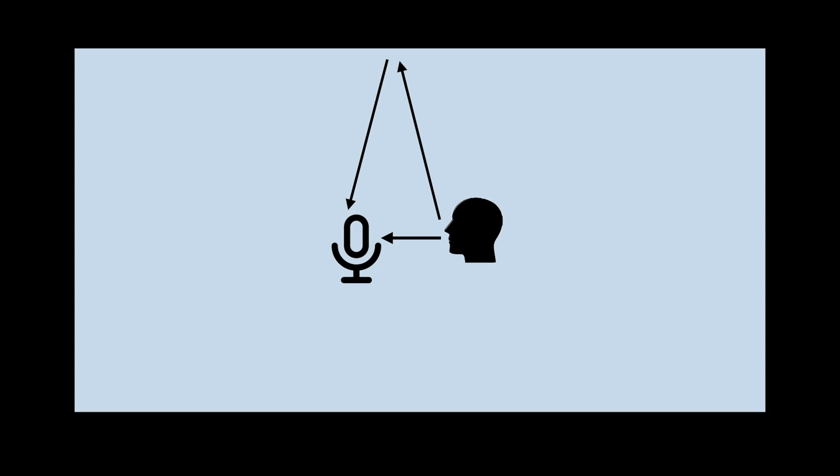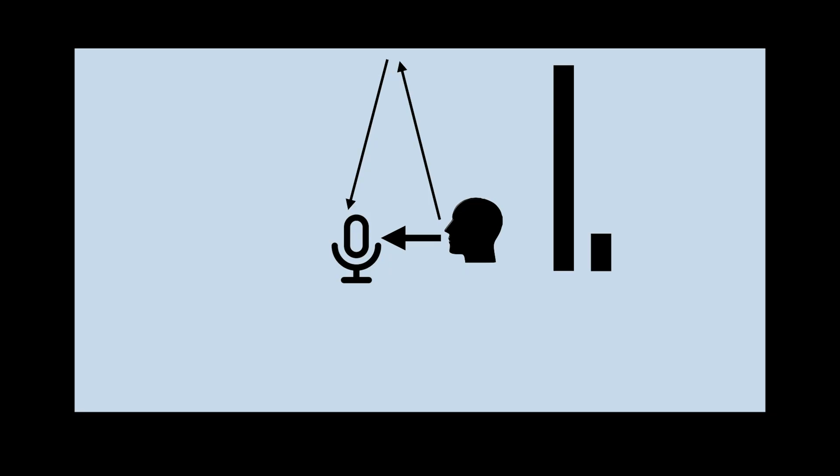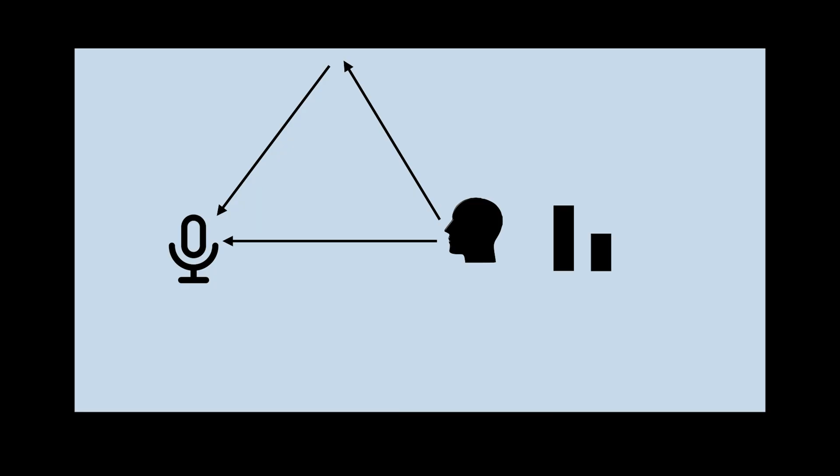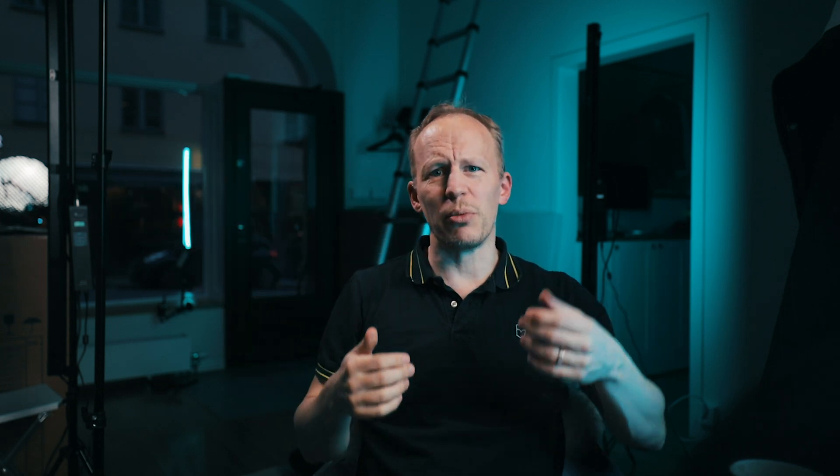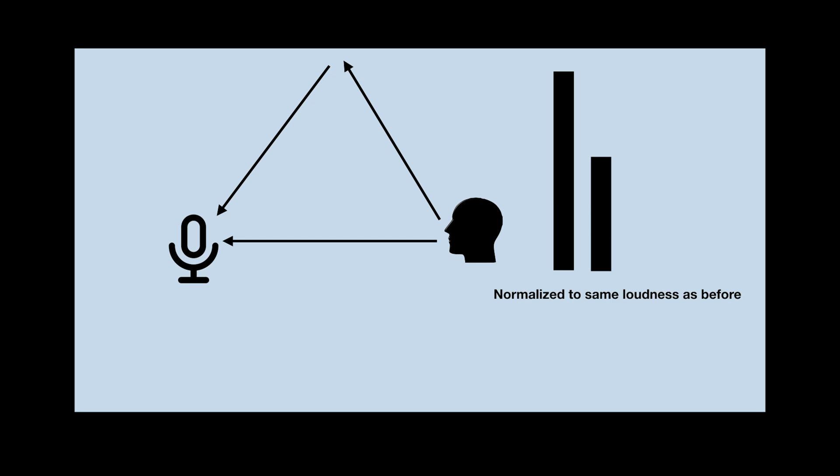Exactly the same thing applies to the reverberation or the echo that you hear in the room. If I hold the mic really close to my mouth, the reverb in the room doesn't change, but my voice gets louder. So the relative difference between my direct voice and the reflections in the room gets bigger. If I move the mic further away out of the visual frame, the difference in sound pressure between my voice that is directly picked up by the microphone and my voice that is reflected in the room is now much less, so they get more blended together.